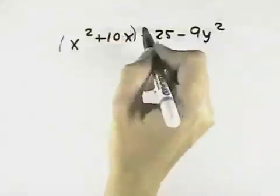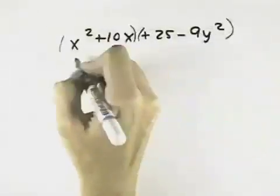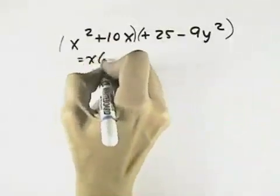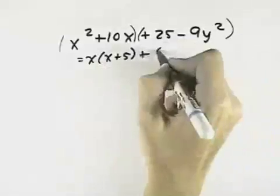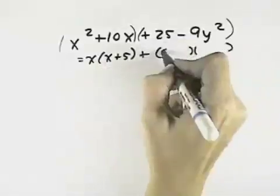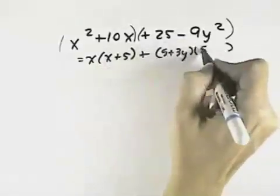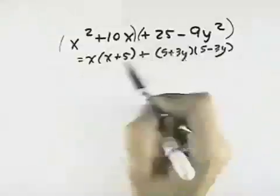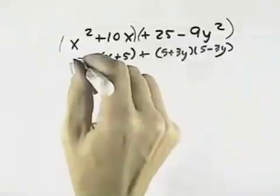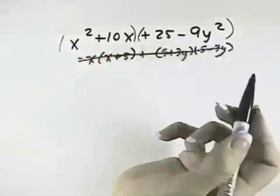We could try breaking up the first terms and the last terms. If we did that, we have a common factor of x in the first term, so we'd have x times x plus 5. But in the last terms, we don't have any common factors. Although we have the difference of squares, there's no common factor, so it doesn't help us with grouping. That choice won't work.